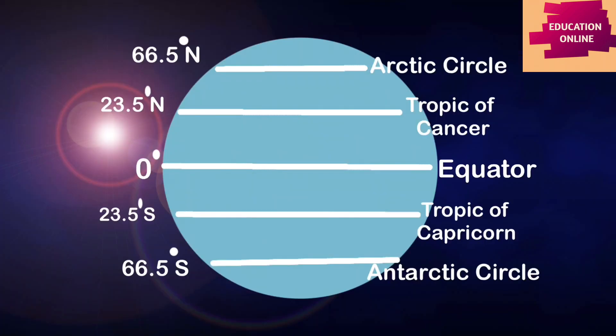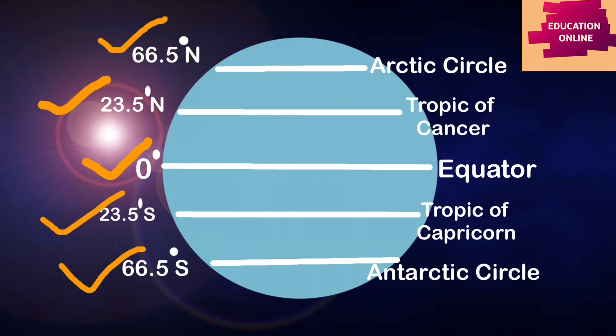Here is a picture which shows the five important parallels of latitude, beginning with the equator at 0 degree, Tropic of Cancer at 23 and a half degree north, Arctic Circle at 66 and a half degree north. For the south, we see the Tropic of Capricorn at 23 and a half degree south and the Antarctic Circle at 66 and a half degree south.